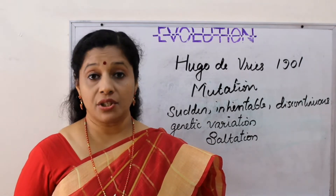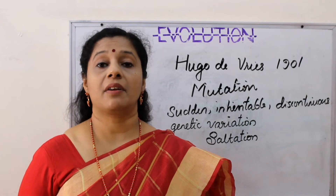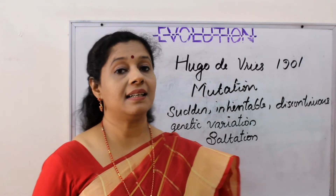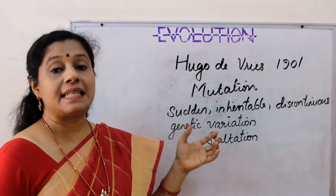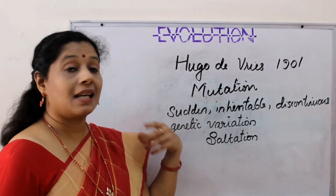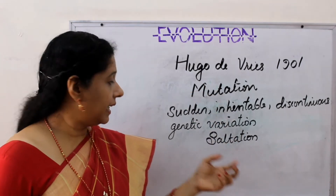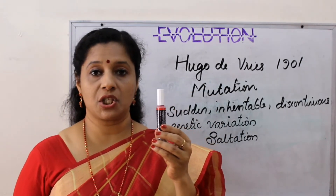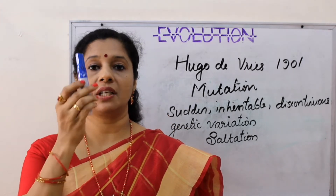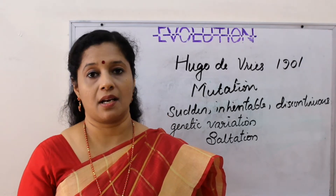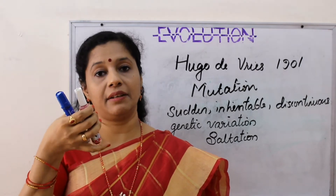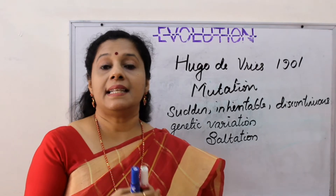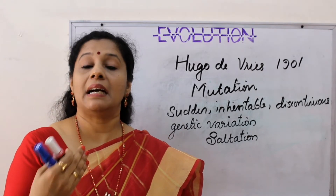According to de Vries, a new species can form from an already existing species by a single process of mutation, which is sudden, which is inheritable, discontinuous genetic variation. Maybe this is our first species - from this, by a single step mutation, a totally different species is forming. It is heritable because any change happening to the DNA will be heritable and will pass to the next generation.